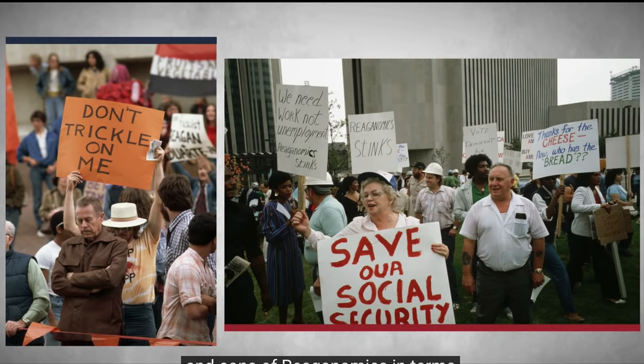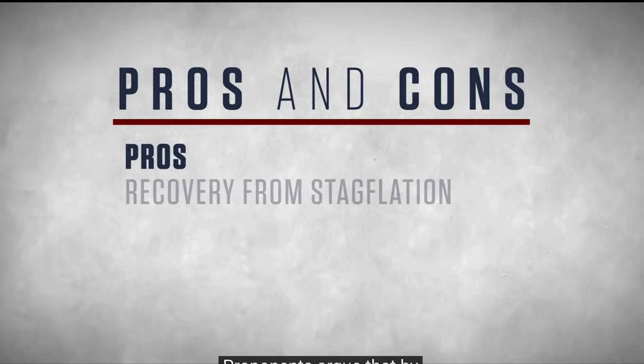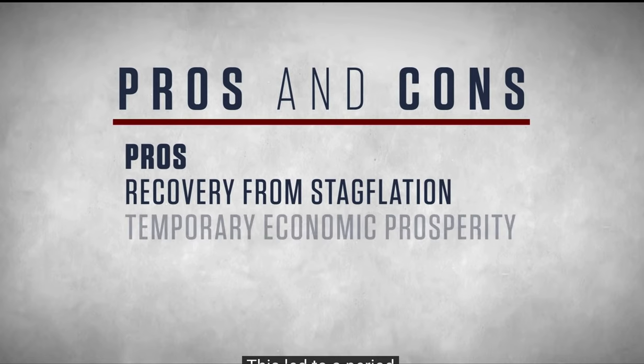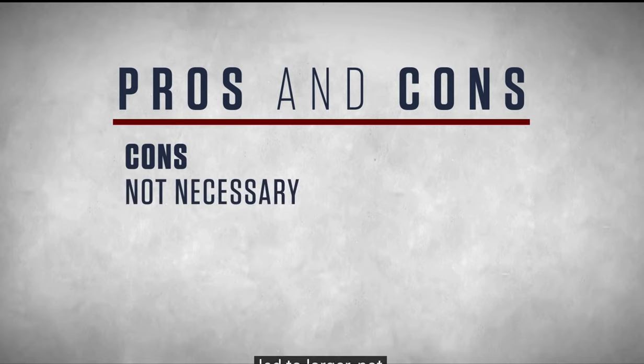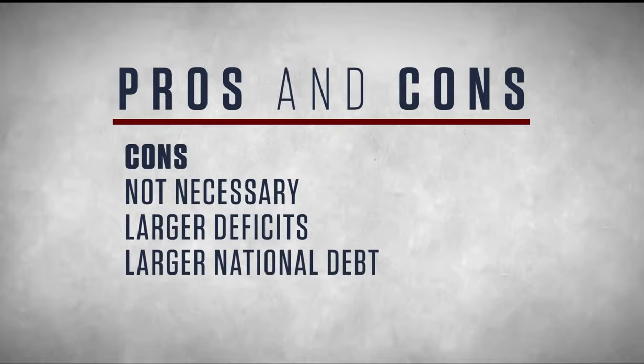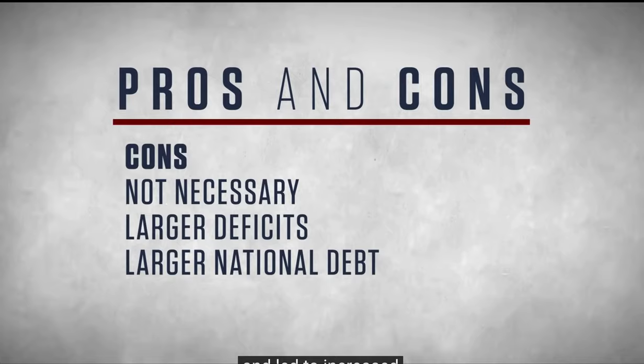Reagan's policies were highly debated, and economists still argue about the pros and cons of Reaganomics. Proponents argue that by 1983, the nation's economy had started to recover from stagflation, leading to a period of economic prosperity through the rest of Reagan's presidency—though another recession soon followed after he left office. Critics argue the economy would have recovered on its own and that Reaganomics led to larger budget deficits and a larger national debt. Many say giving corporate tax cuts while cutting domestic social programs favored the rich and led to increased wealth inequality. Either way, it remains a defining part of Ronald Reagan's legacy.